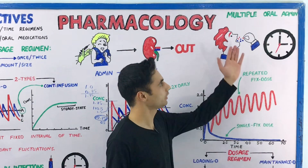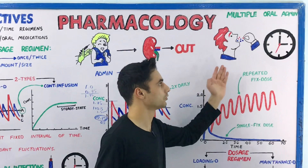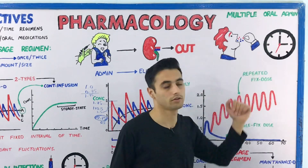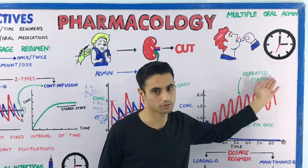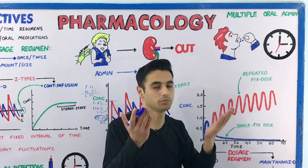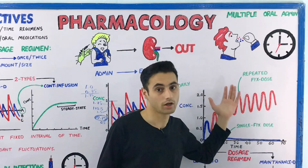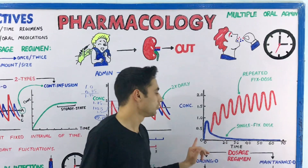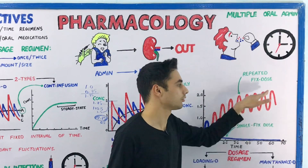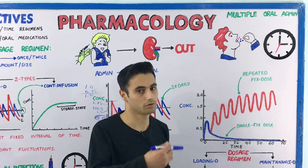Now, what happens during multiple oral administration? You take a fixed amount of medication through the oral route at fixed intervals of time — for example, 20 milligrams at three o'clock, then again at six o'clock, then at nine o'clock. The plasma concentration oscillates between the mean and the extreme in the same pattern as multiple IV administration. The blue graph represents a single fixed dose, and the red graph represents multiple repeated fixed doses through oral administration.